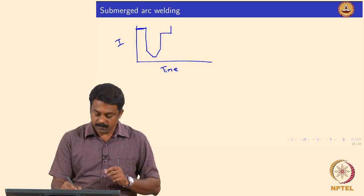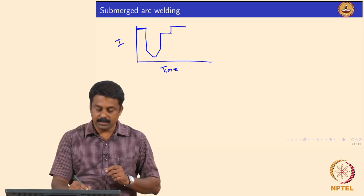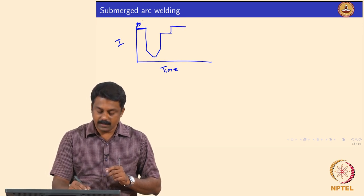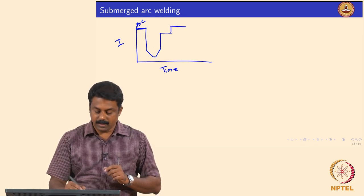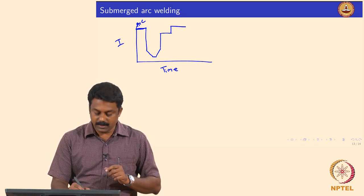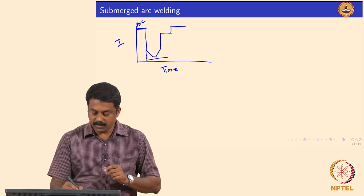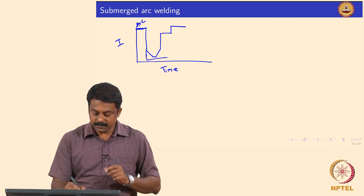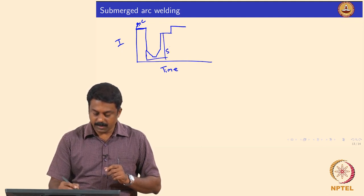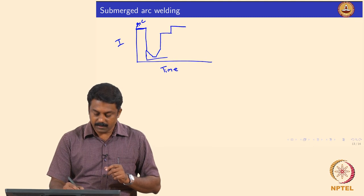Once the wire is retracted back and upon reaching a typical arc length, we increase current again to ignite the arc and follow the same steps. This arcing current phase is followed by the short circuiting phase, which repeats cyclically.